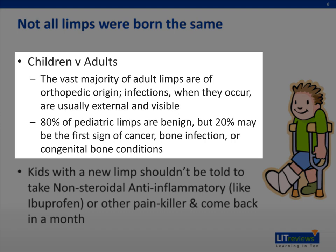One thinks differently about limp in children versus in adults. Adults usually present with an orthopedic injury and typically can tell you about how they stepped off of the curb funny or twisted their knee. Children, however, 20% of the time, the limp is the first sign of cancer, a serious bone infection, or congenital bone condition. It's important to take these limps seriously and to evaluate them appropriately so as not to miss an important or dangerous cause.